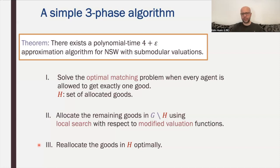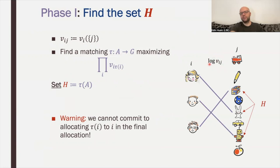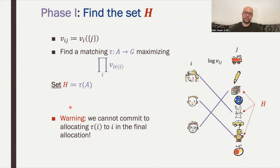In phase one, we find a set H by finding a matching that gives each agent one item and maximizes Nash welfare of agents' valuations. This is done by constructing a bipartite graph with edge weights log v_{ij} and running a maximum weight perfect matching algorithm. For example, suppose this is the optimal matching: this girl gets a rabbit, the boy gets a robot, and the third agent gets a Rubik's cube. This will be our set H of highly valuable goods — but we cannot allocate items along this matching directly, otherwise the algorithm will fail.